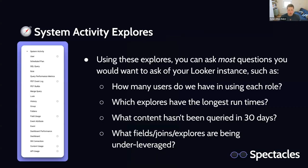Using these explorers, you can ask most questions you'd want to ask of your Looker instance. You could use the user explorer to see how many users you have in each role. You could use the history explorer to see which explorers have the longest runtimes. You could use the content usage explorer to see what content hasn't been queried in 30 days. You can use a combination of explorers — mostly the history explorer — to see what fields, joins, and explorers are being under-leveraged. When we speak to customers who have particularly slow Looker instances, the first place we go is to build a query in the system activity explorers to figure out where issues are being felt and what might be the cause.